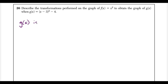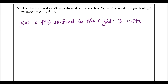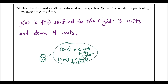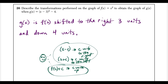When x is replaced with x minus c, the function moves c units to the right. If it's x plus c, the function moves c units to the left. If you add a constant to f(x), it moves up c units; if you subtract c from f(x), it shifts down c units. The minus four at the end shifted it down because it was tacked on at the end, not replacing x.